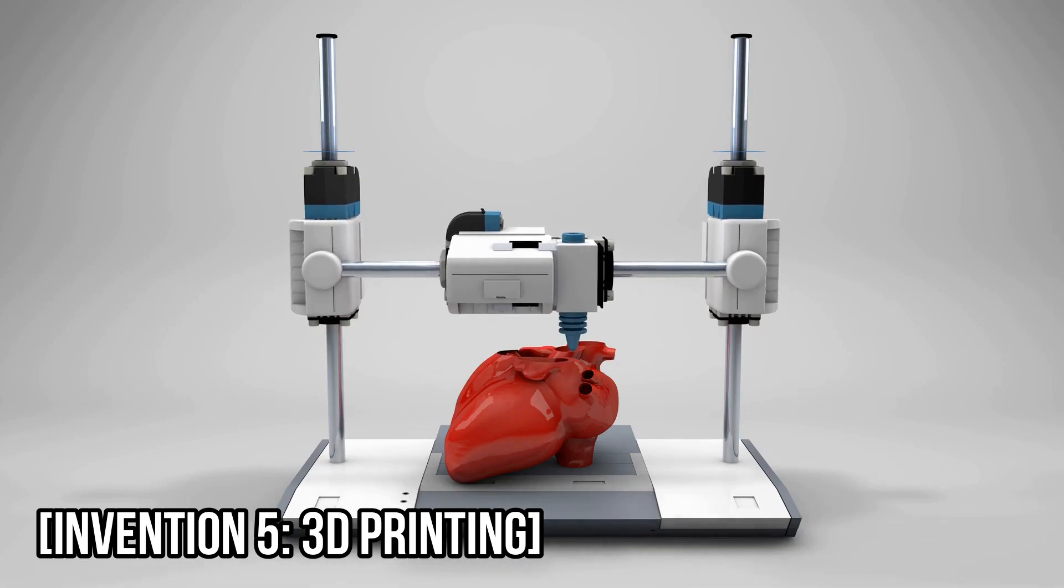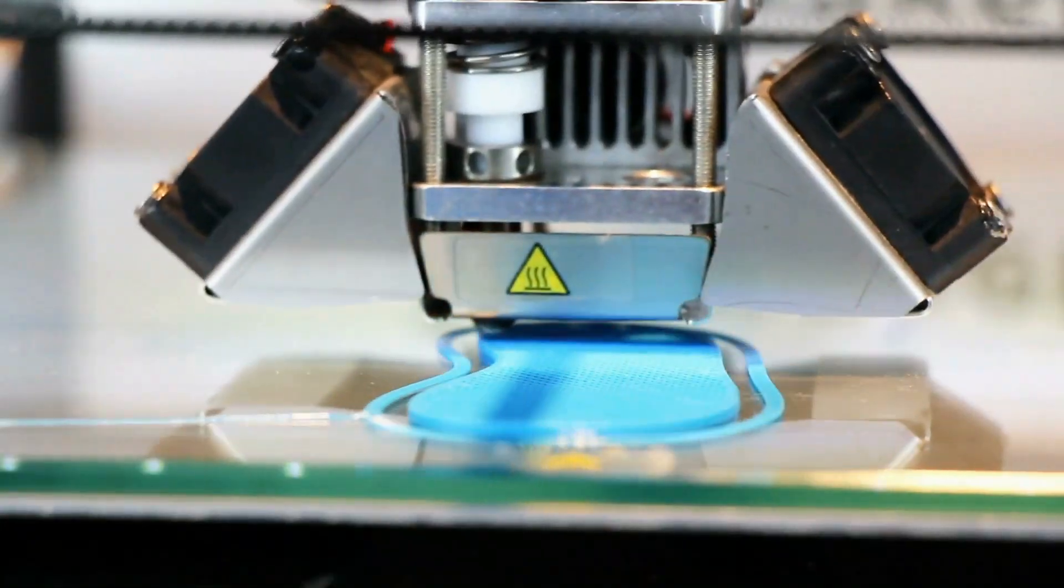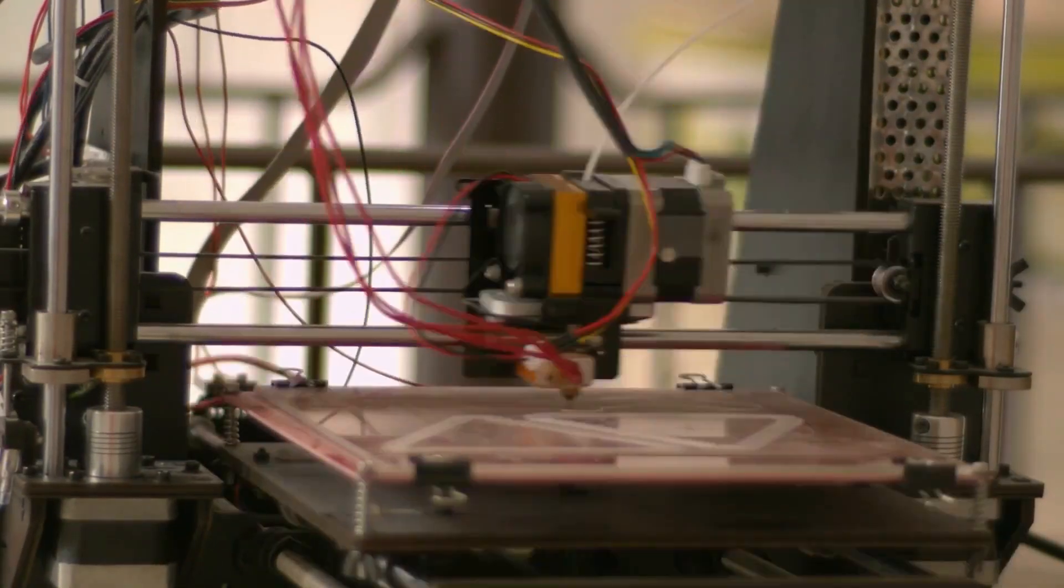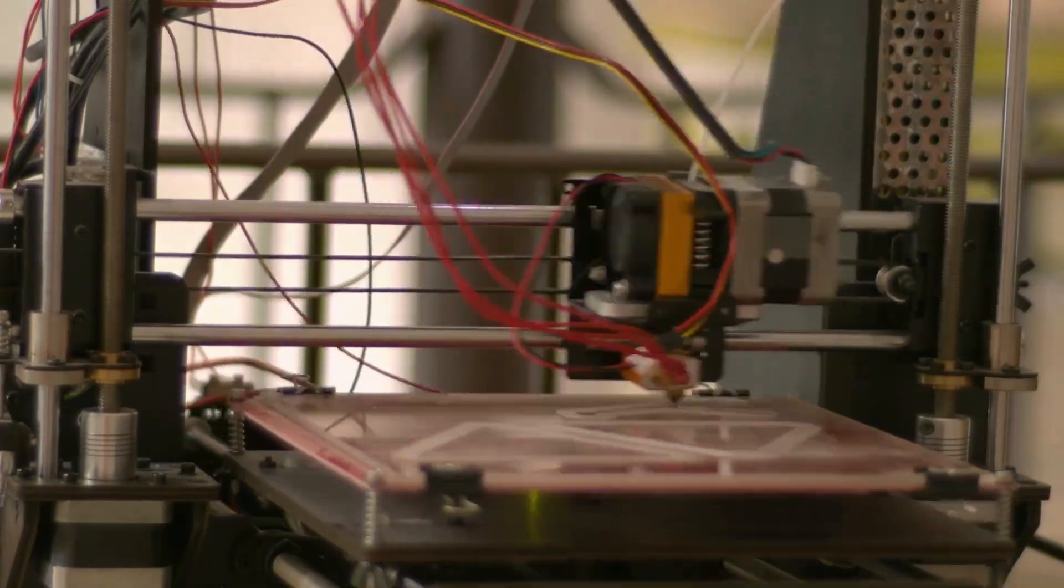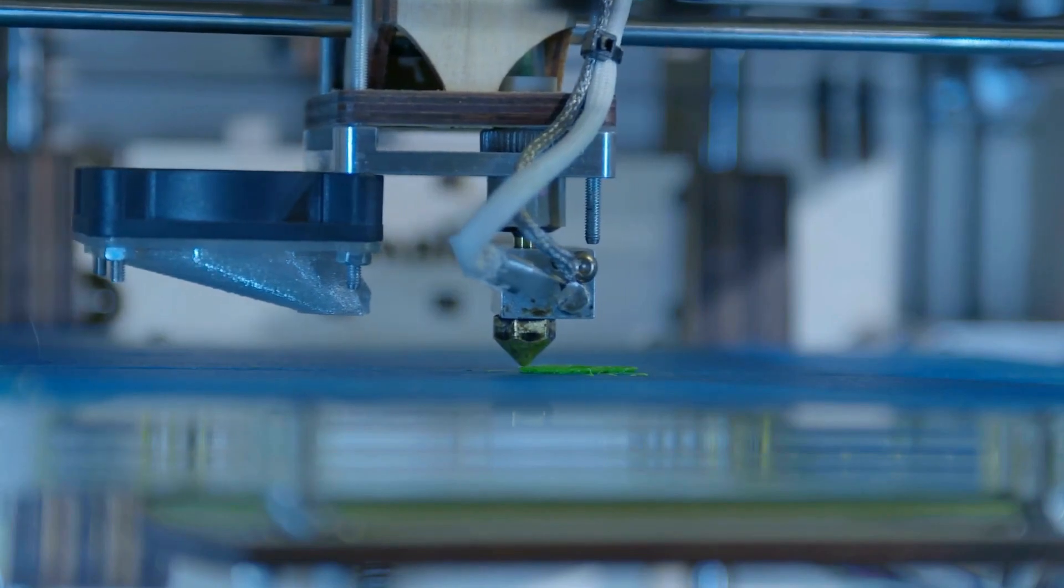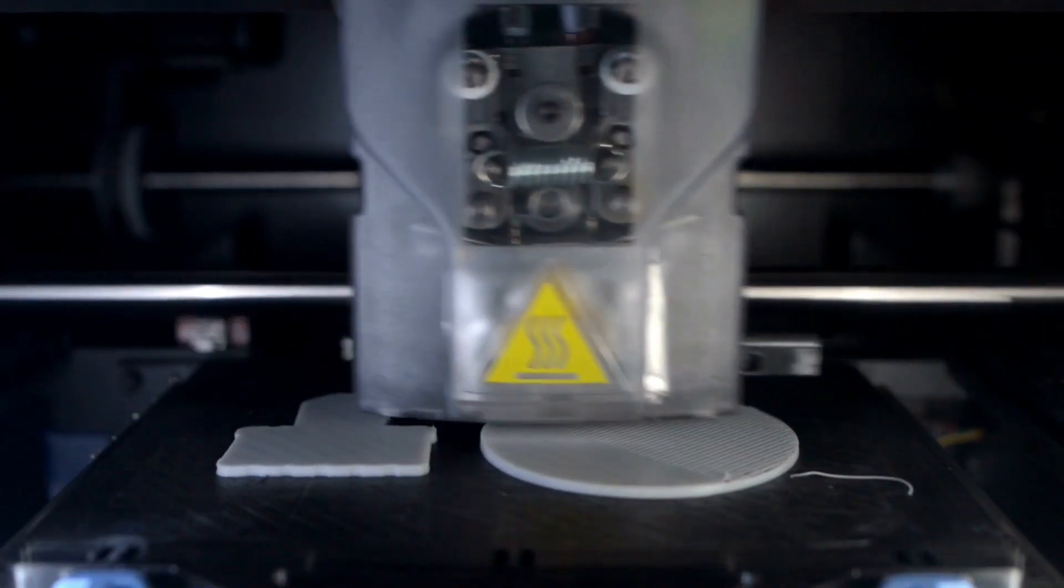Invention 5: 3D Printing. 3D printing is a technology that can create three-dimensional objects from a digital model. It has the potential to revolutionize manufacturing, allowing for the creation of customized products on demand. This technology has already been used to create everything from prosthetic limbs to car parts.